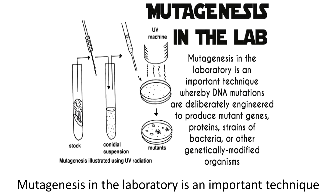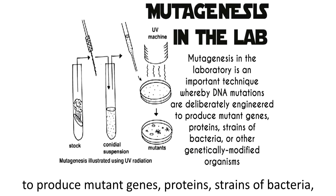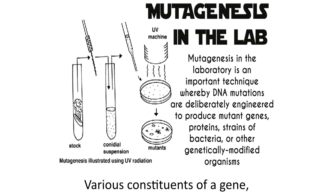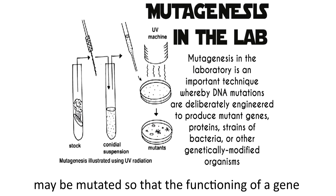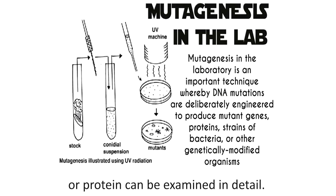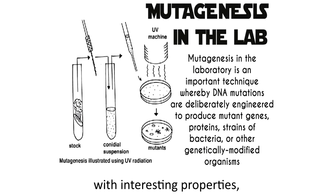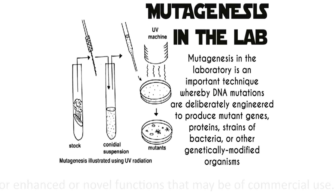Mutagenesis in the laboratory is an important technique whereby DNA mutations are deliberately engineered to produce mutant genes, proteins, strains of bacteria or other genetically modified organisms. Various constituents of a gene, such as its control elements and its gene product, may be mutated so that the functioning of a gene or protein can be examined in detail. The mutation may also produce mutant proteins with interesting properties, or enhanced or novel functions that may be of commercial use.